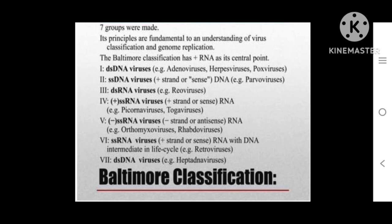In the Baltimore classification, the first group is double-stranded DNA viruses — examples are adenovirus, herpesvirus, and poxvirus. The second group is single-stranded DNA viruses with a sense strand — example is parvovirus. The third group is double-stranded RNA viruses — example is reovirus. The fourth group is single-stranded positive-sense RNA viruses — examples are picornavirus and togavirus.